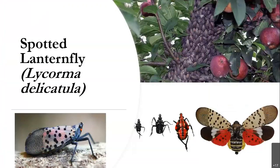Spotted lanternfly, or SLF, is an invasive plant hopper native to Asia that was unintentionally introduced in 2014 in Pennsylvania in a shipment of rocks from Asia. SLF feeds on the sap of more than 70 plant species — crops, vineyards, nuts, fruit trees, and maples — and is a significant threat to agricultural and tourism industries with over $350 million in grape and apple yields at risk. The appearance of SLF changes depending on its life cycle stage: first through third instar nymphs are black with white spots; they turn red with black spots just before becoming adults with colorful wings that somewhat resemble a moth. SLF are most often seen with their wings closed, and they swarm in big groups on host plants.